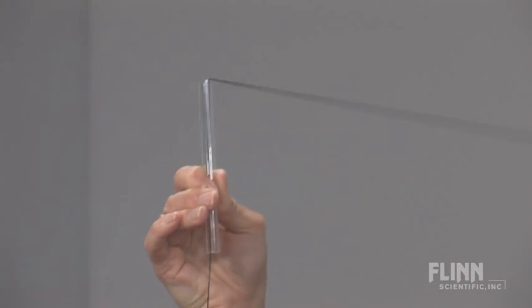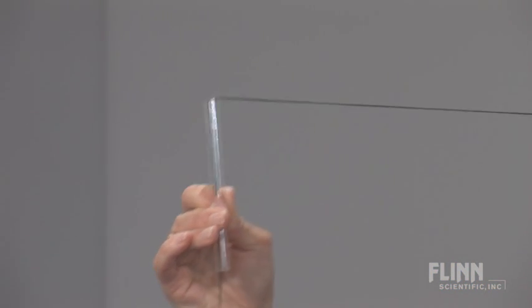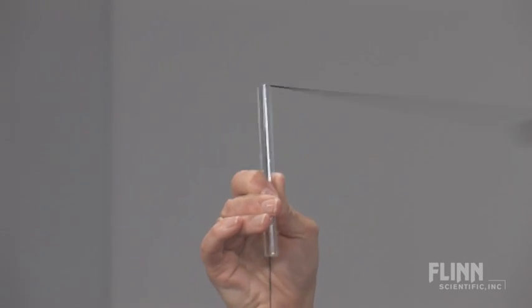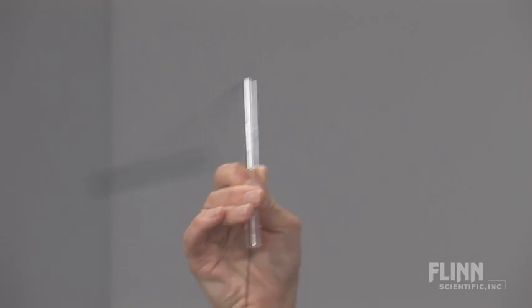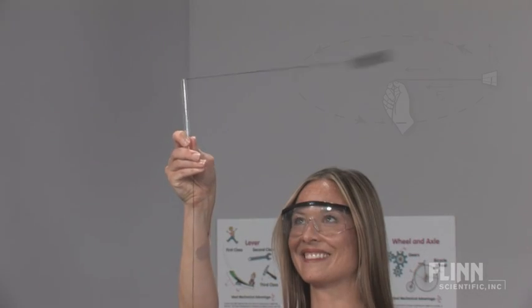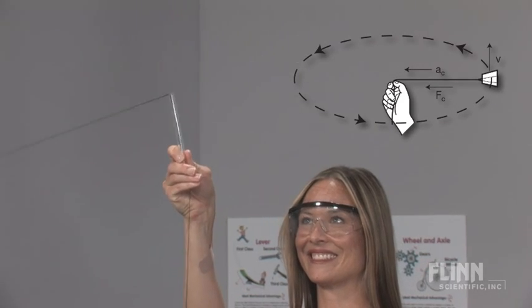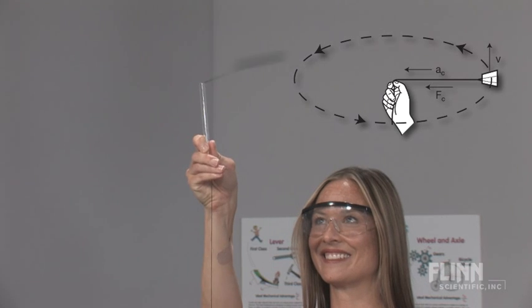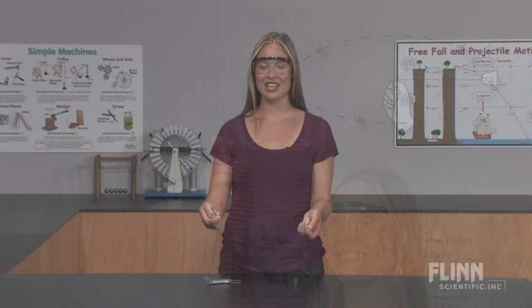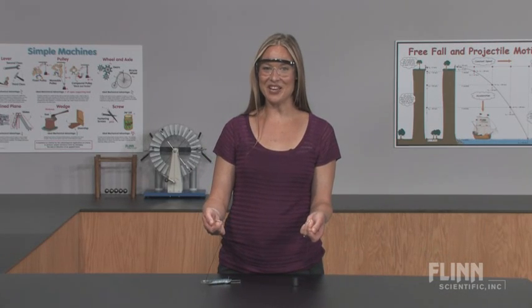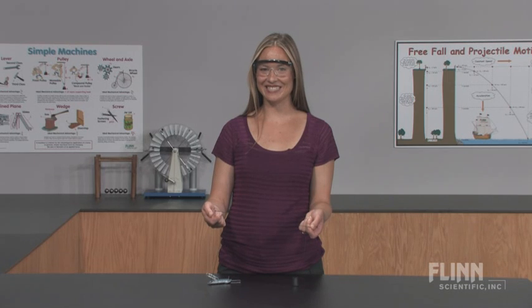A great activity to show students that in order for a planet, star, or satellite to maintain orbit, the object must travel at a specific speed. Bring these concepts down to earth with the Flynn Scientific Orbital Speed Demonstration Kit.